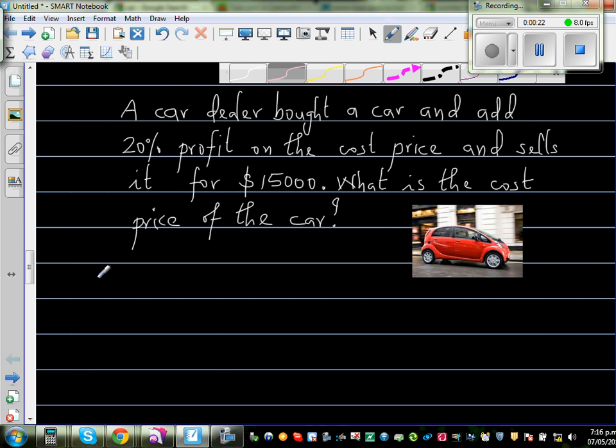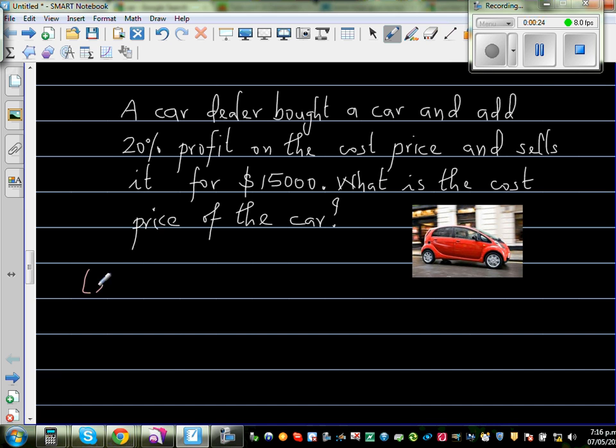So we'll say let the cost price be $100. Let the cost price be equal to $100. Okay, so we'll start there. And the profit is 20%. A dealer is adding 20% profit on the cost price. So profit is 20% or is given to be 20%.